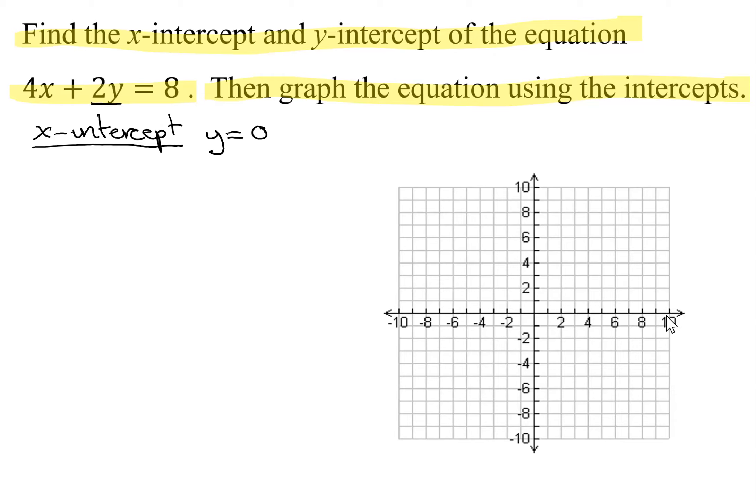So in my equation up here, I'm going to have 4x plus 2 times 0 equals 8. So 4x, 2 times 0 is 0. So 4x plus 0 is 4x. So we get 4x equals 8. Now divide both sides by 4, and I get x equals 2.